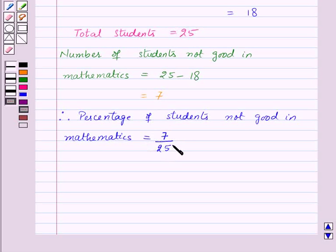To change this fraction into percentage, we multiply by 100. So percentage is 7/25 times 100. 25 and 100 will cancel by the common factor 25, and we get 28%.